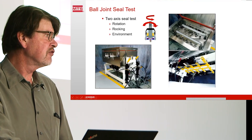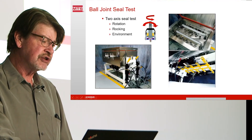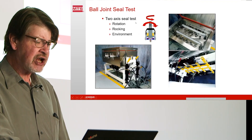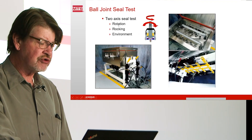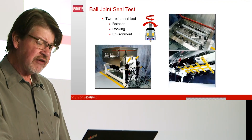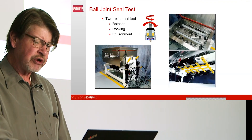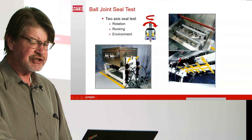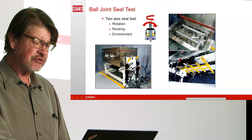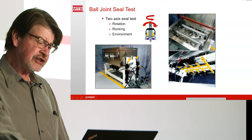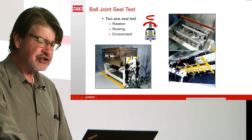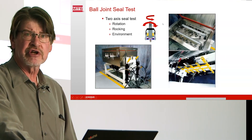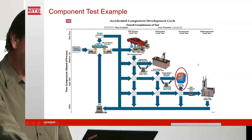We can't accelerate slippage — if you go too fast you might overheat or change the wear characteristics. This is a ball joint seal test with two axes of rotation and rocking, along with an environmental chamber. We can put hot and cold, sands, slurries, salts and things in here and test ten seals at once, all getting exactly the same excitation. By putting different materials in here, for example, we can see how various materials last.